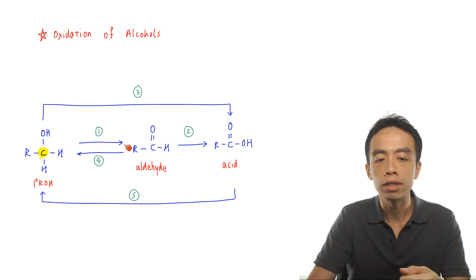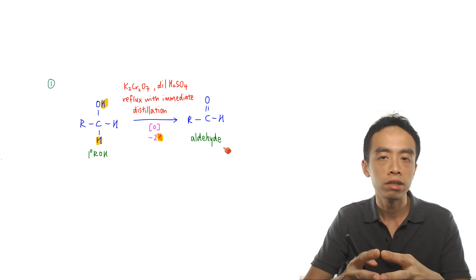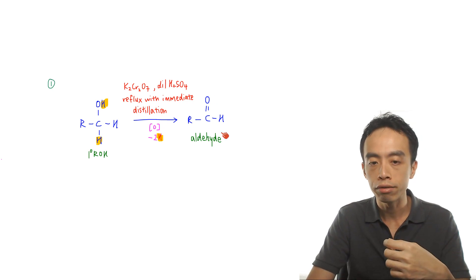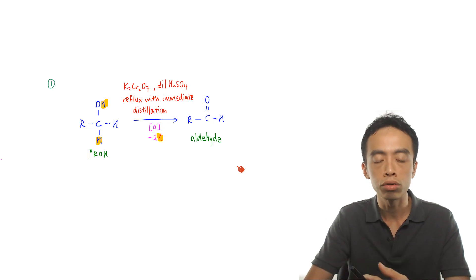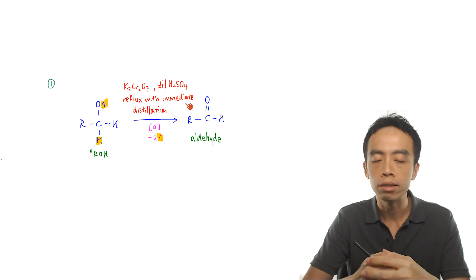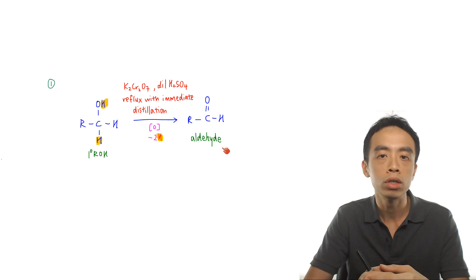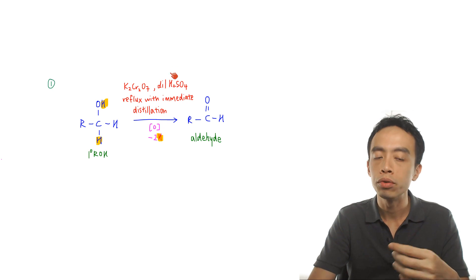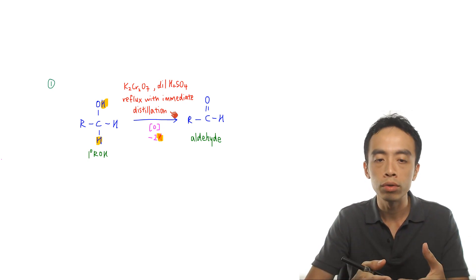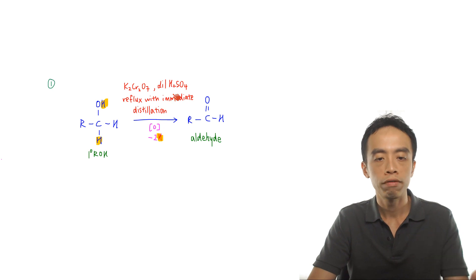Reaction 1 is the oxidation of primary alcohol to aldehyde. Because aldehyde can be further oxidized to carboxylic acid quite easily, we have to do a mild oxidation and remove the aldehyde from the reaction mixture once it is formed. The reagents and conditions are quite specific: we must use dichromate in dilute H₂SO₄, reflux with immediate distillation. Using permanganate is too strong — even with distillation it will oxidize all the way to carboxylic acid. Similarly, using dichromate in dilute H₂SO₄ with reflux but no distillation will also oxidize the aldehyde to carboxylic acid.